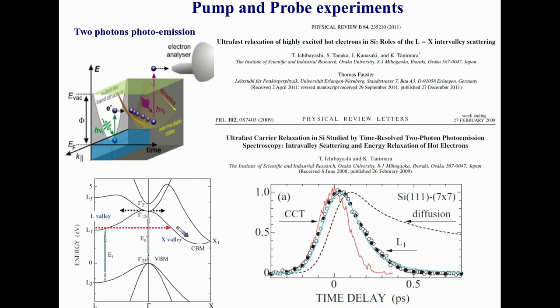Then measuring the intensity of photo-emission signal from this point in the Brillouin zone. Here's the picture of the intensity. The simple interpretation is that electrons are injected here, in this valley, from the pump pulse which is here in red. Then electrons scatter from here to the minimum of the conduction band, so the signal goes down. This is a simple interpretation, and I will show you how we can describe that and if this matches with first principle simulations.